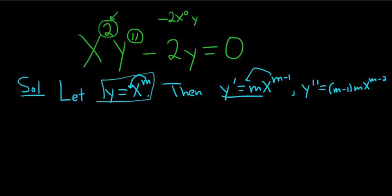So you start with this always, take the derivatives, and then just plug them in. So we have x squared and y double prime. That will be m minus 1 times m, x to the m minus 2, minus 2, x to the m, and that's equal to 0.